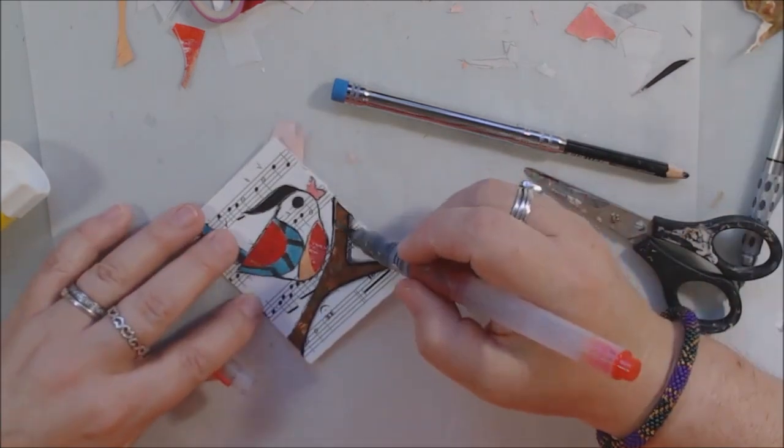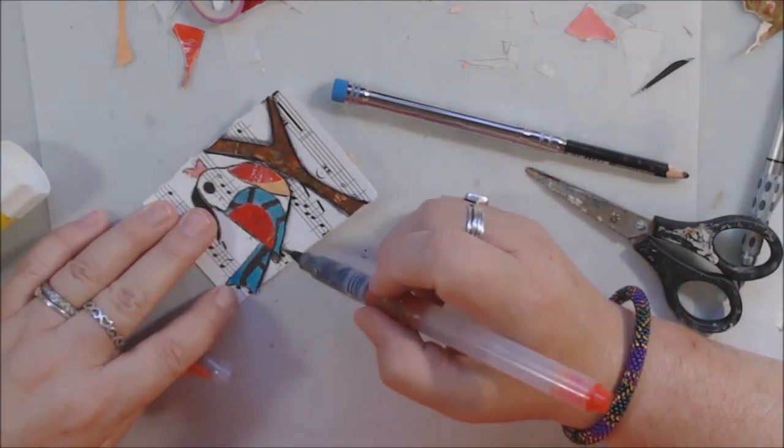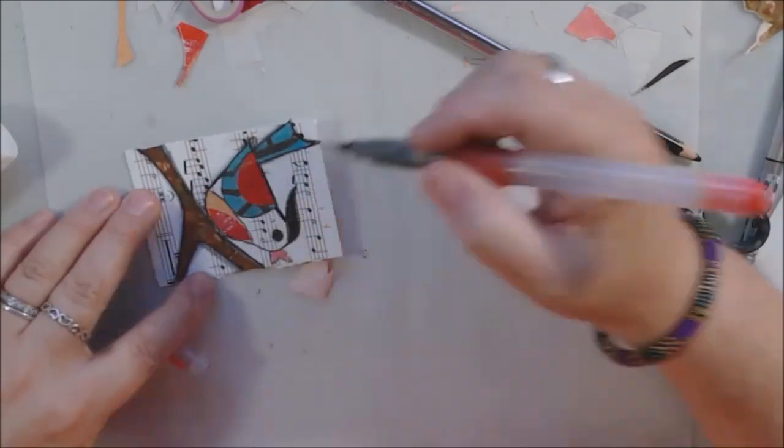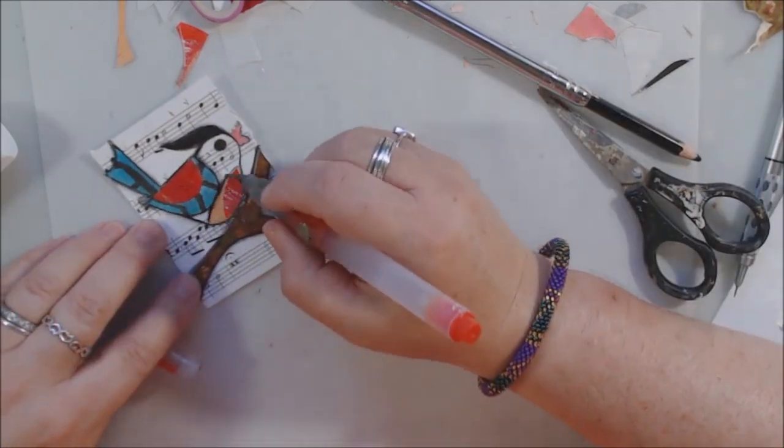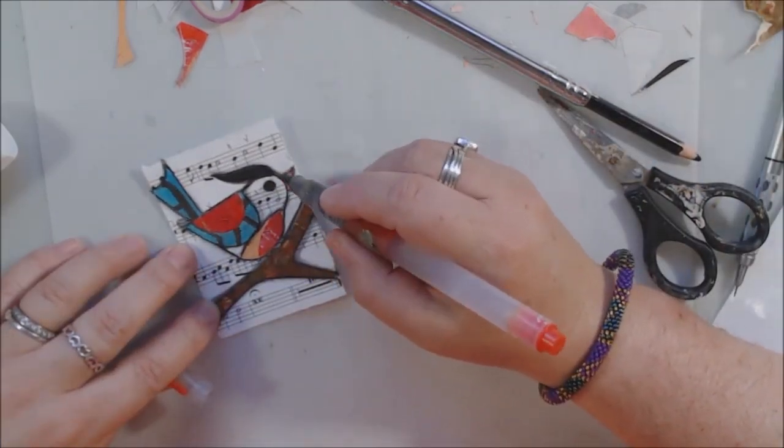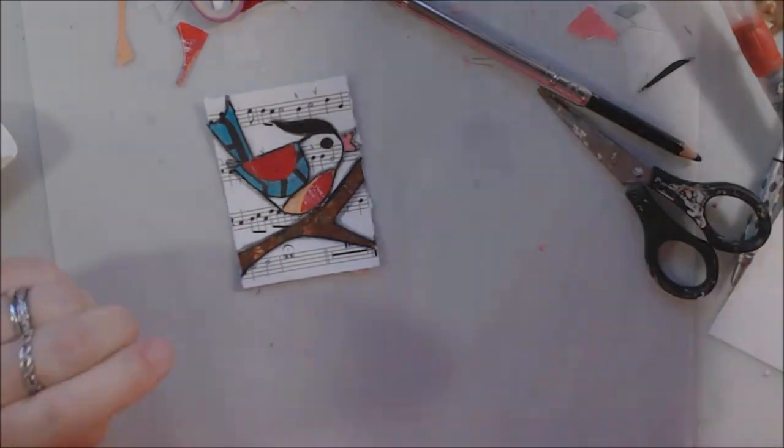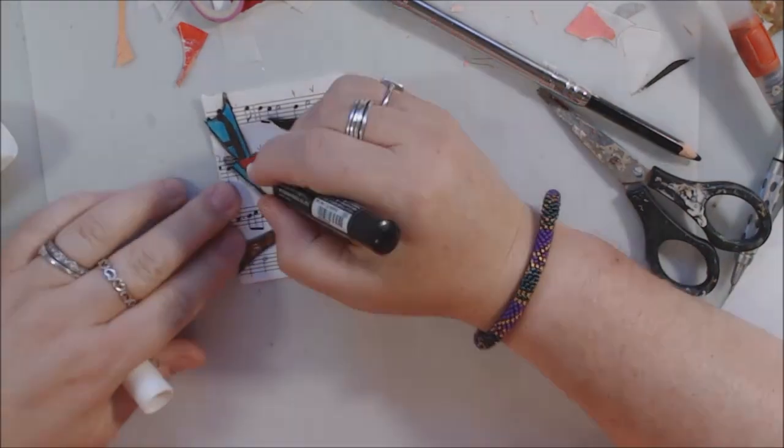You can blend it out and make it into some shadow. I thought that would be nice over the music paper because I got the whole black and white situation going on - I thought it'd be nice to have some shades of gray.